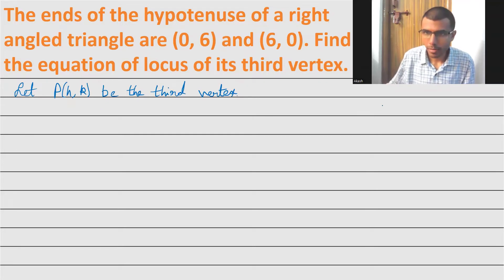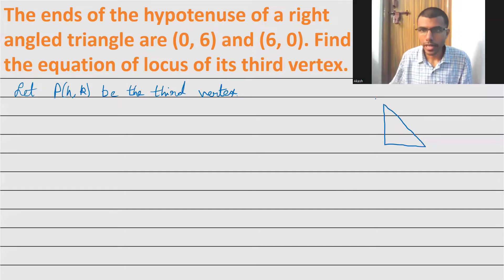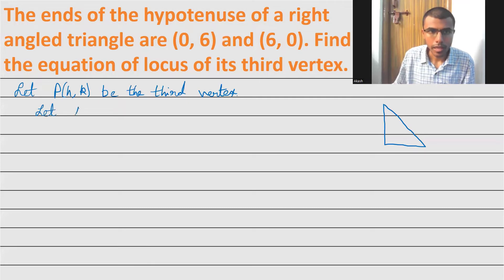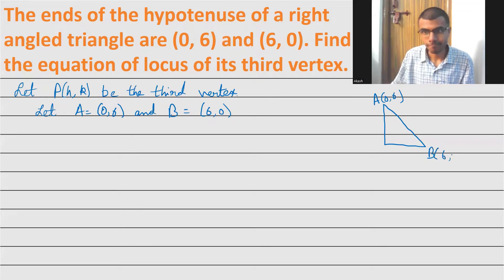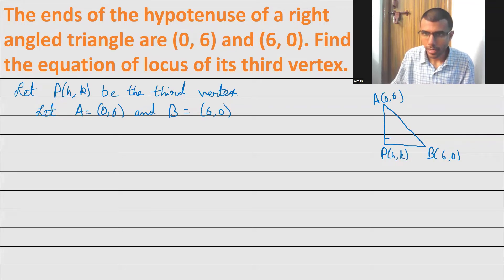I'll just make a brief diagram so you'll have a nice understanding. Let A = (0,6) and B = (6,0). So this is my point A at (0,6), this is my point B at (6,0), and this is my point P at (h,k), with the 90-degree angle at P.